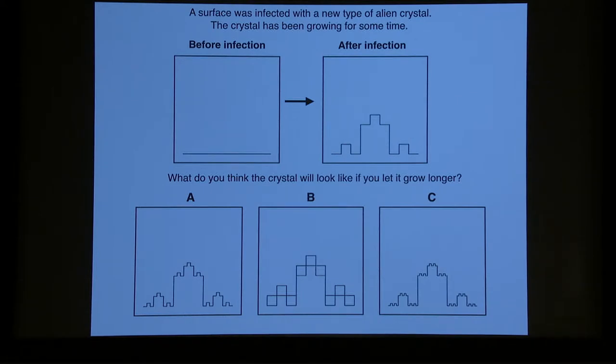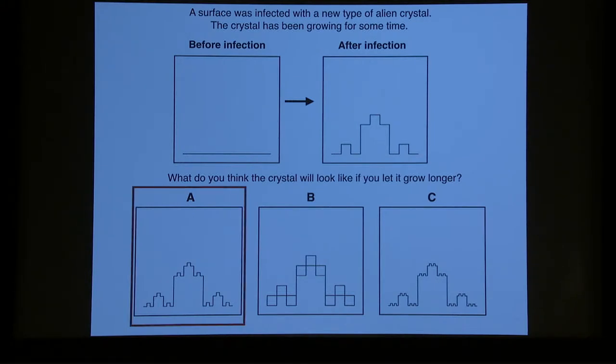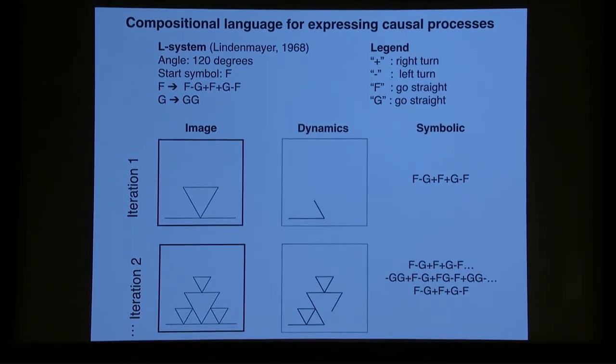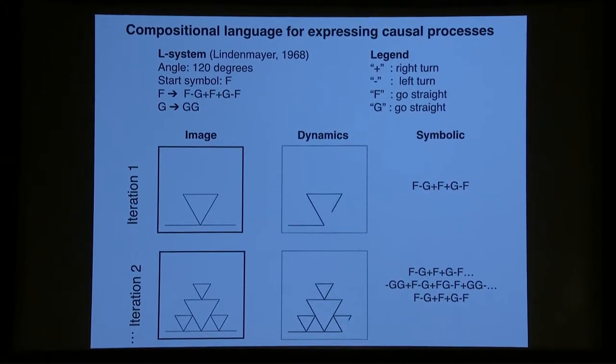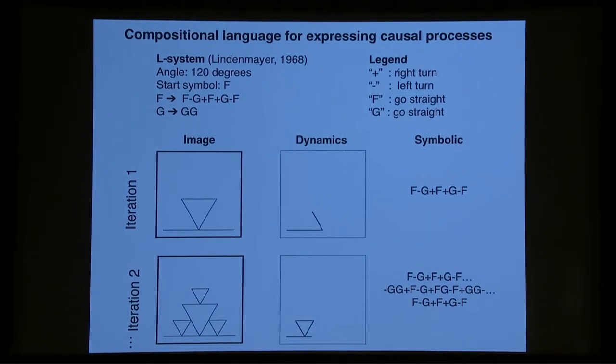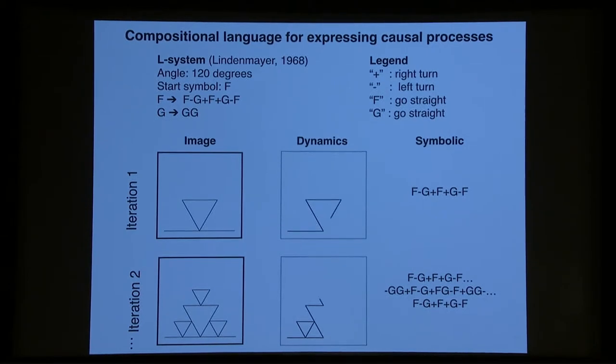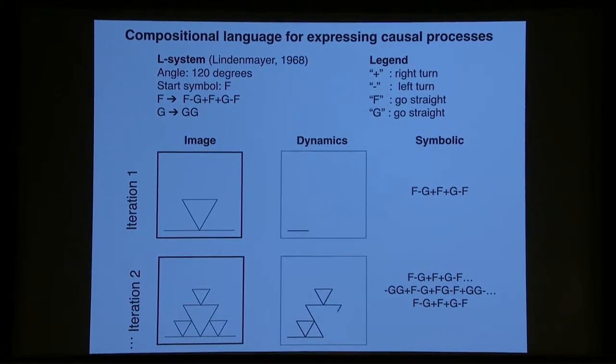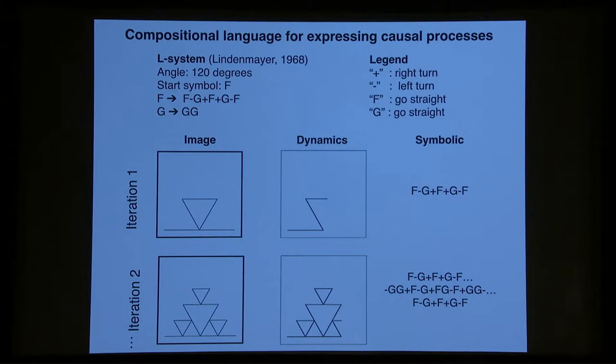Here's another example. Different crystal. It's infected the surface and grown, and the right answer in this case is A. So the concepts are defined in a compositional language for expressing these causal processes, and I mentioned that there are L-Systems. I'll say a few things about L-Systems if you're unfamiliar. It's a lot like a context-free grammar in that it's a series of string rewrite rules, but rather than like a context-free grammar where you apply the rules one at a time, you apply the rules in parallel in all possible locations on the string.